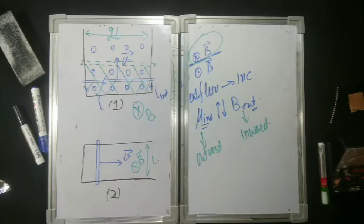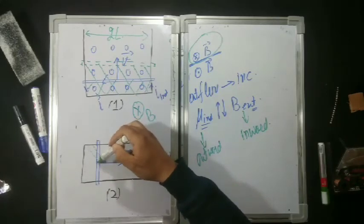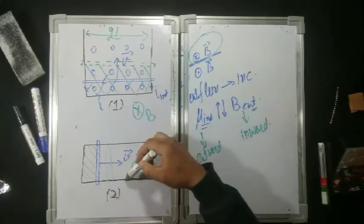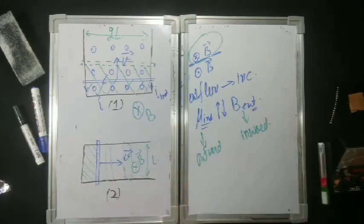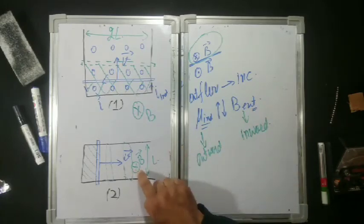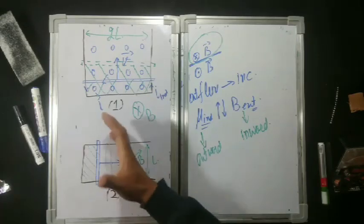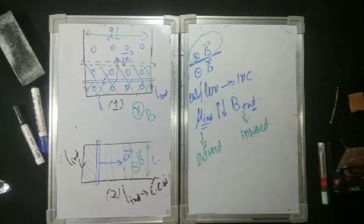Now for Part B, we need to find the current direction in circuit 2 — clockwise or counterclockwise. Again, the rod is moving forward, the loop size is increasing, so the area increases and flux increases. Since flux is increasing and the external field is inward, the induced dipole moment will be outward (opposite sense). If the dipole moment is outward, the current is counterclockwise. So the current induced in circuit 2 is counterclockwise. Using Faraday's Law, we can solve this quite easily.